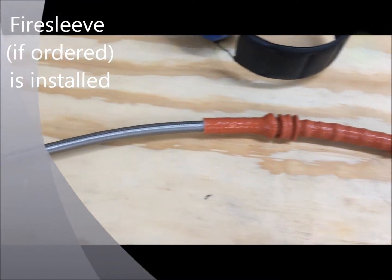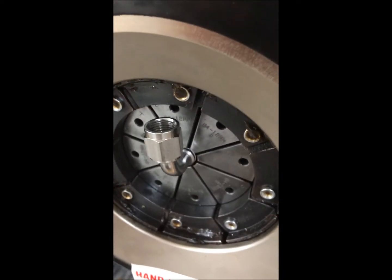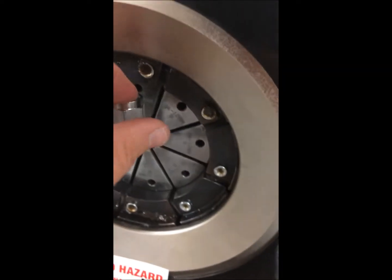Then we slide fire sleeve onto your hose. And then it's time to do the second fitting. Now the hose that we're fabricating here had a straight fitting on one end and a 90 degree fitting on the other.